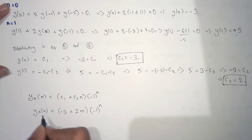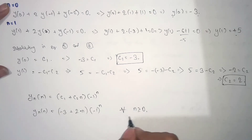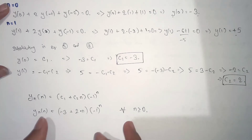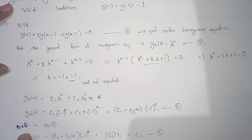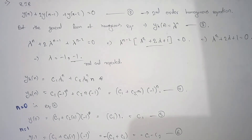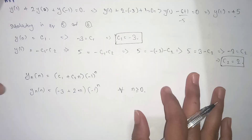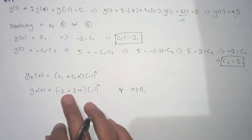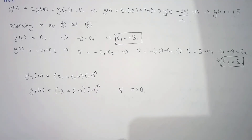Substituting C1 and C2 into our homogeneous equation, the natural response becomes: y_n(n) = (-3 + 2n)·(-1)^n, for all n ≥ 0. Never forget to write the condition n ≥ 0, because it is very important. That is our final natural response of the system.